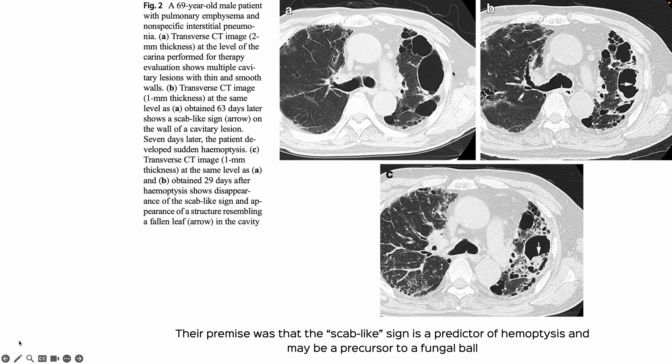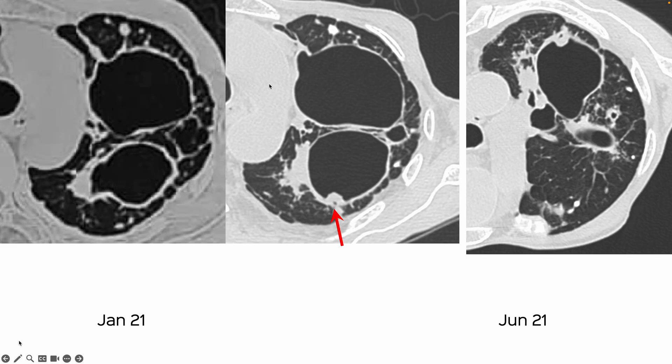What they said is that the scab-like sign is a predictor of hemoptysis in patients who have chronic cavities. They showed an example of a patient who didn't have anything, then they found the scab, then it fell in — and they said it could also be a precursor to a fungal ball.